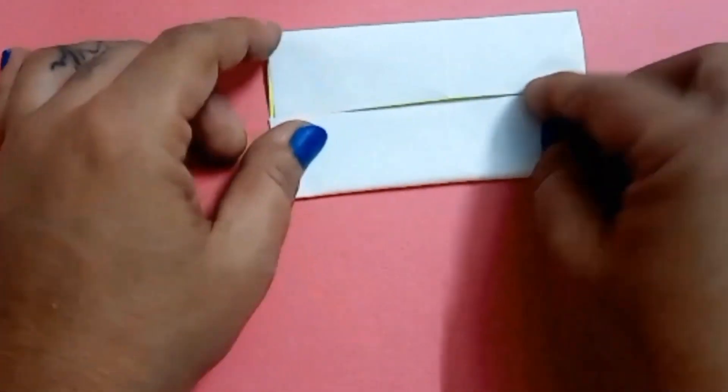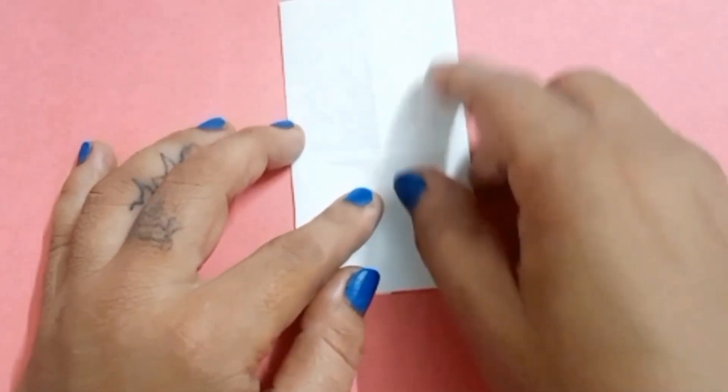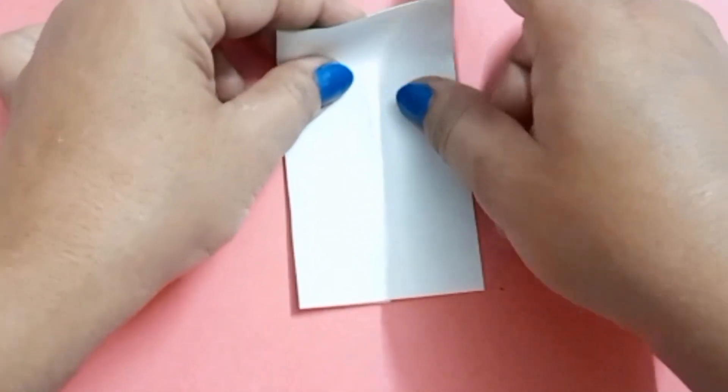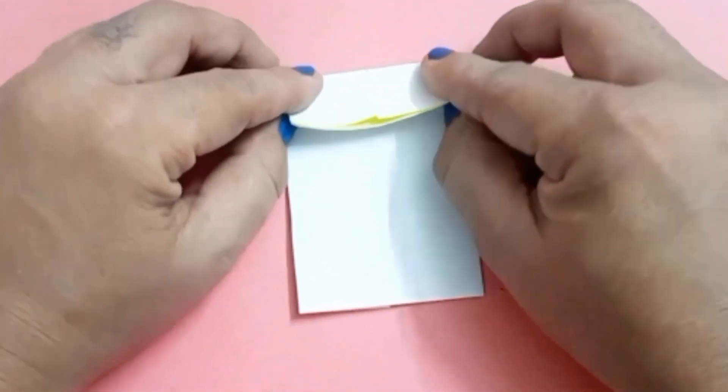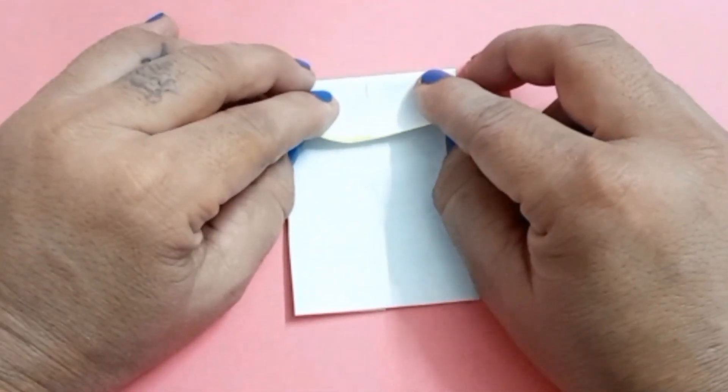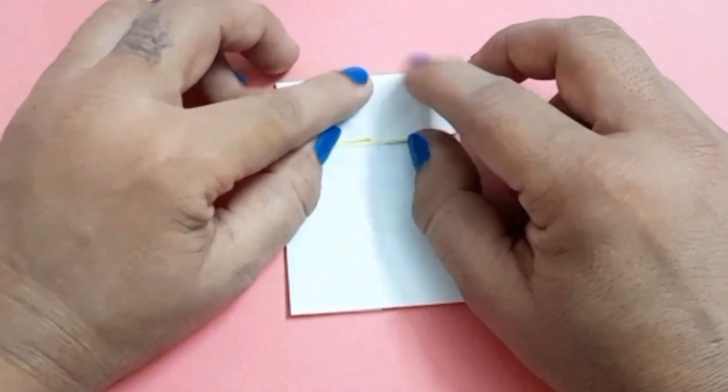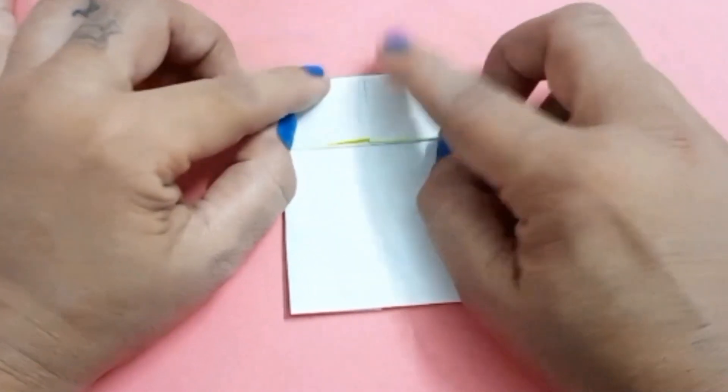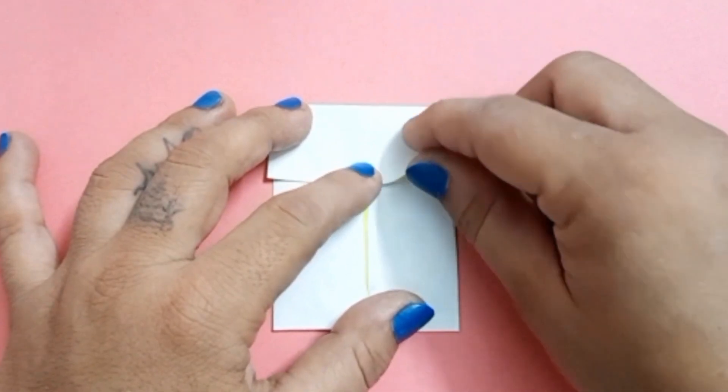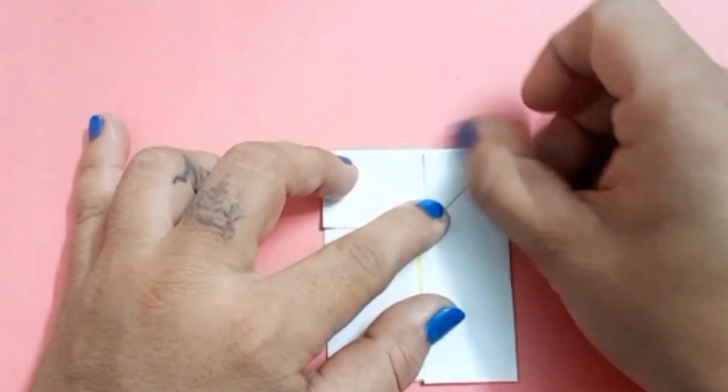Turn over and fold the top side towards the bottom. You will not touch the bottom side. Just fold it till the center. Fold the corner to the top side.